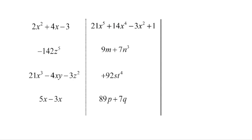These are all examples of polynomials, algebraic expressions made up of terms that we are adding or subtracting. We can have monomials with one term, binomials with two terms, or trinomials with three terms. A term is made up of variables and coefficients that we are multiplying together. Each term is separated by either plus or minus signs.